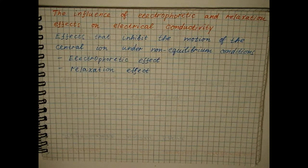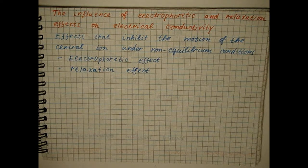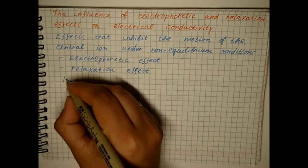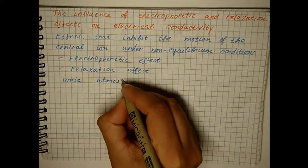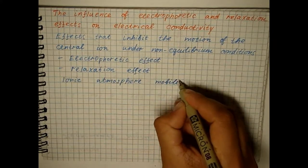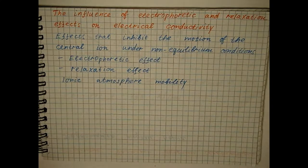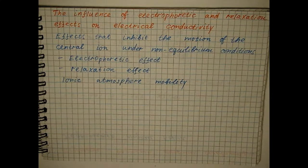Consequently, the mobility of the ionic atmosphere should be subtracted from the limiting ionic mobility. The mobility of the ionic atmosphere can be calculated by the formula.